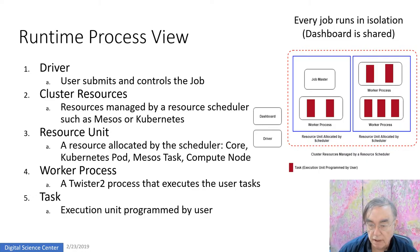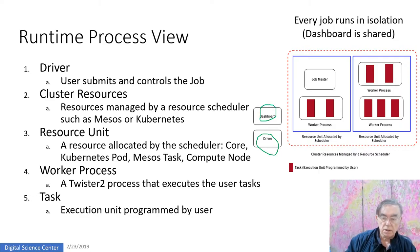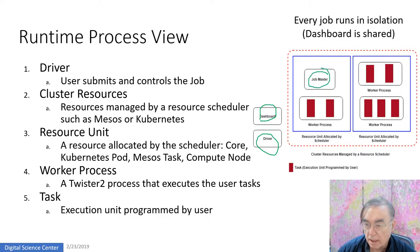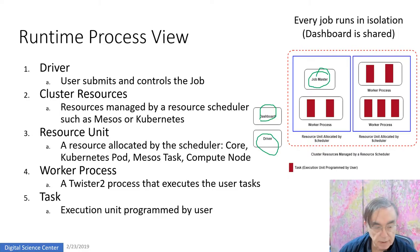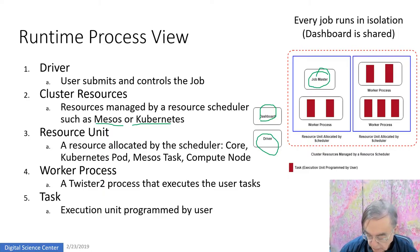Here we have a view of the actual runtime structure. Everything starts with a driver, which could be on the client but needn't be. We have a dashboard for monitoring Twister 2, so you can see what's going on and query the status of your job. For every job there is a job master, analogous to a system from Hadoop. We have worker processes, and the scheduler allocates resource units to handle the workers and various system components. The user programs the worker with the tasks. Cluster resources are managed by Mesos, Kubernetes, or Slurm. The resource unit is typically cores — Kubernetes has pods, Mesos has tasks — along with the compute node.